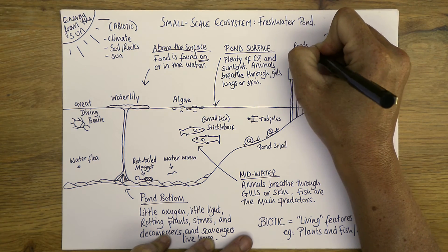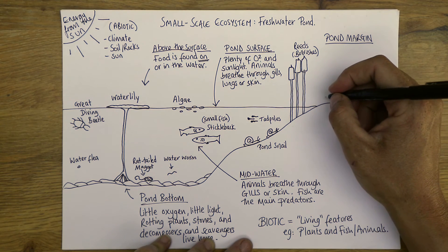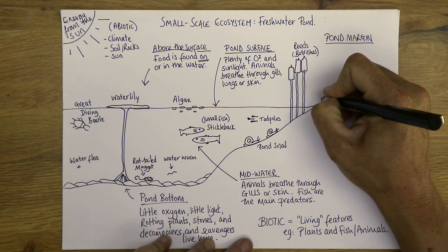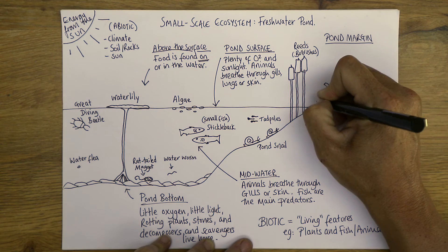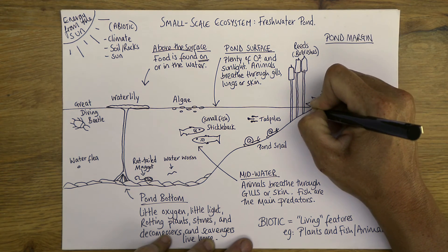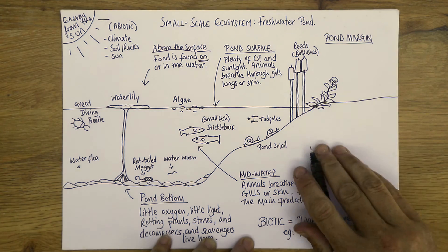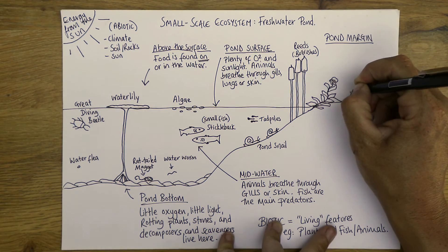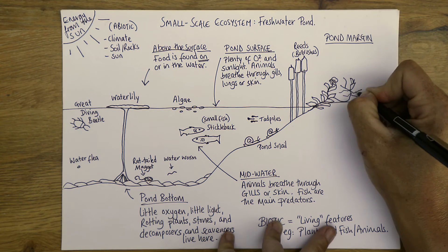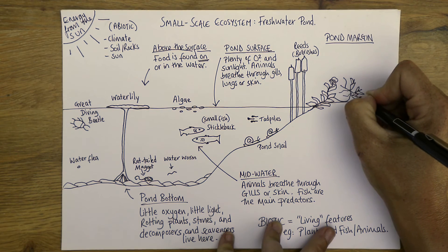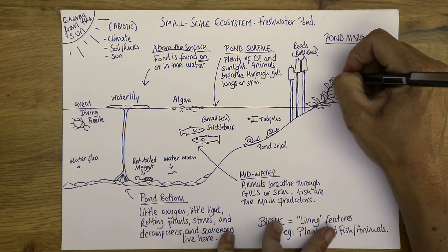The other main plant we'll include here is a pond marigold. It's very leafy and quite happy to have its leaves in the water or out of the water, which is why it's such a good pond plant. It kind of trails around. It's also a flowering plant, so it's good for insects as well.